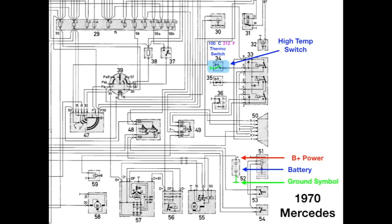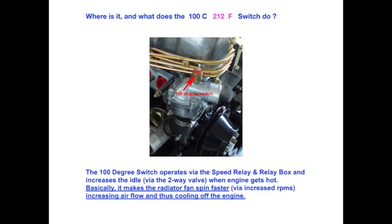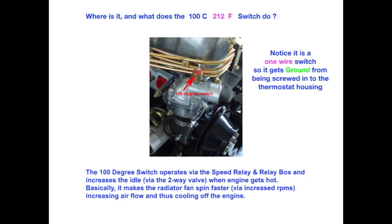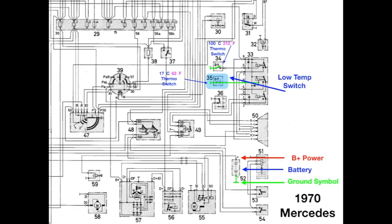We have a high temperature switch. I'm listing both the centigrade and the Fahrenheit, but it's a high temperature switch. Where is it, and what does it do? The high temperature switch operates by the speed relay and the relay box, and it increases the idle by way of the two-way valve when the engine gets hot. Basically, it makes the radiator fan spin faster. It increases airflow and thus cools off the engine. I want you to notice that it is a one-wire switch. So, it gets its ground by being screwed into the thermostat housing.